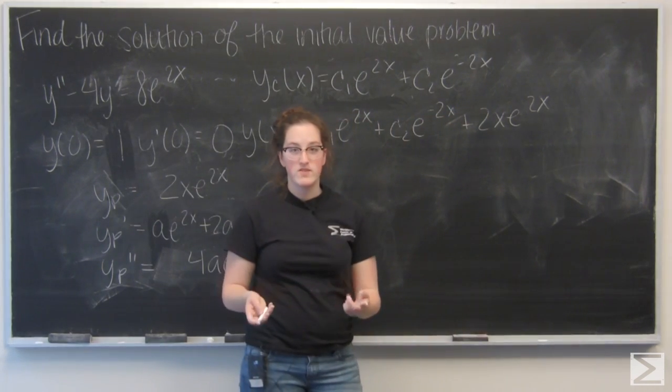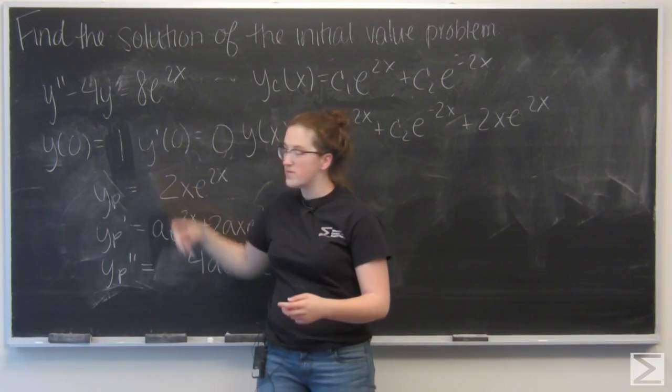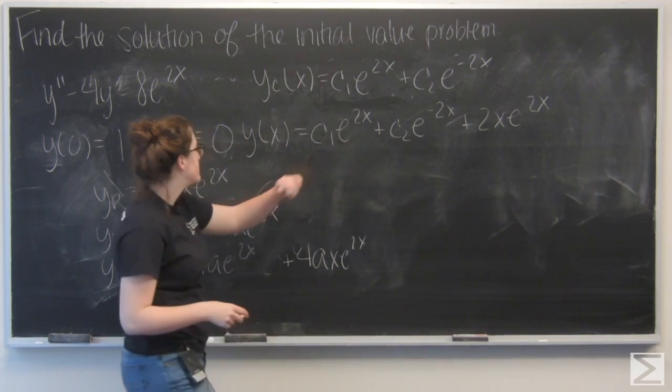Now, since I'm given initial conditions, y of 0 and y prime of 0, I want to use those to solve for c1 and c2. Let's start by using y of 0.